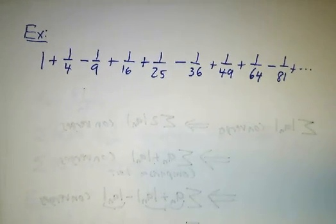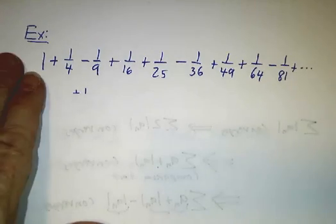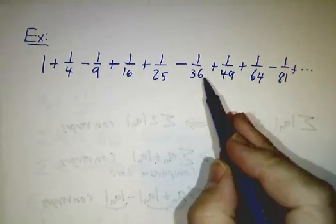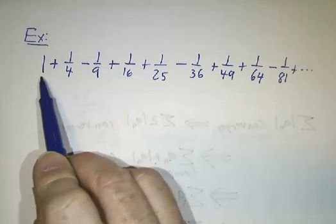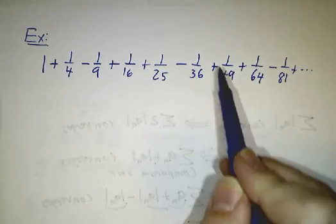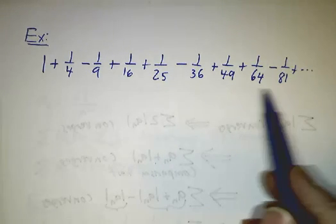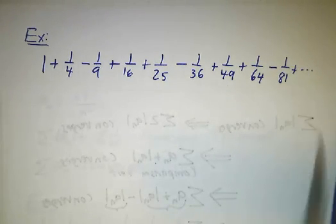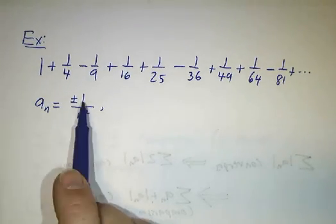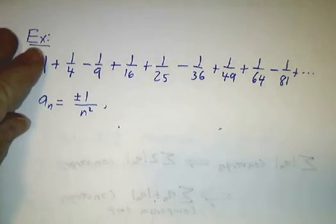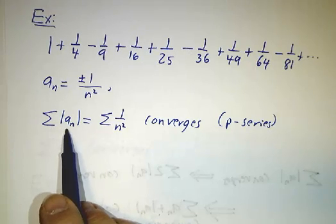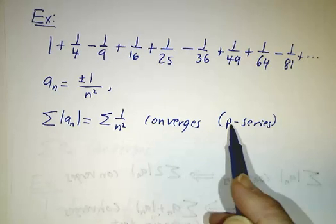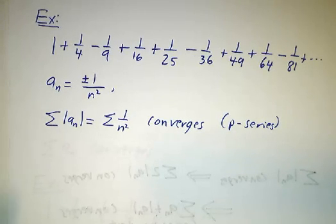For example, let's look at a series: 1 plus a quarter, minus a ninth, plus a sixteenth, plus a twenty-fifth, minus a thirty-sixth. This looks like our 1 over n² series, except that some of the terms are negative — I've made every third term negative. So you've got positive, positive, negative, positive, positive, negative. It's not an alternating series. But what we know is that each term is plus or minus 1 over n². That means the absolute value of an is 1 over n², and the sum of the absolute values converges — that's because it's a p-series with p equals 2, which converges by the integral test.